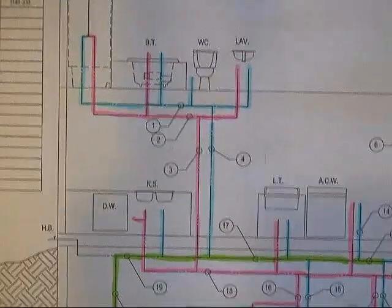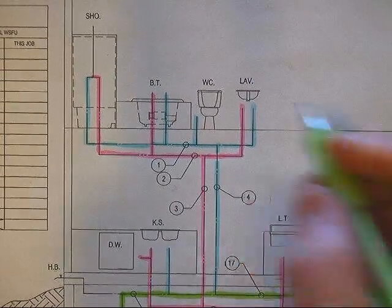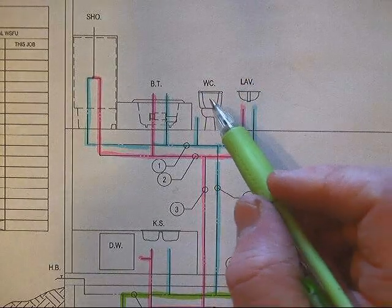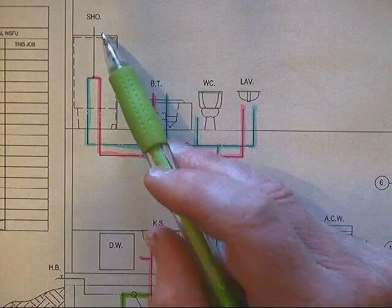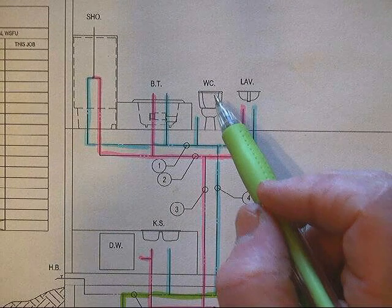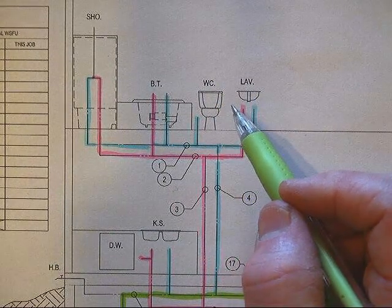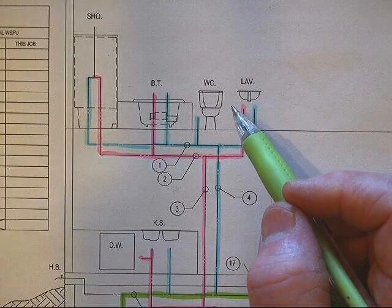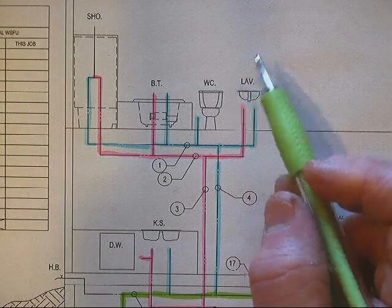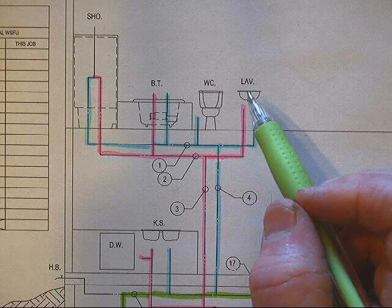I'll then move over to the other group across the drawing and in this group you can see we actually have a shower, a bathtub, a flush tank water closet, and a lavatory. Again, we have a bathroom group according to our state's definition of bathroom groups, but we also have inside of that bathroom group an extra fixture.